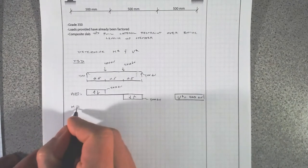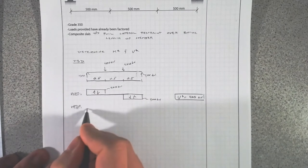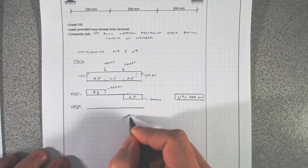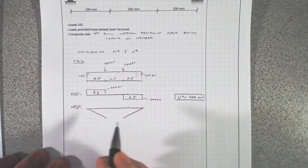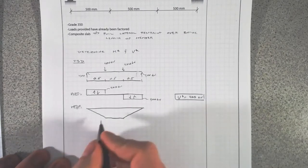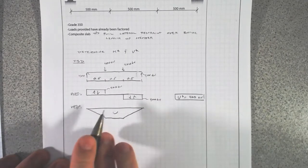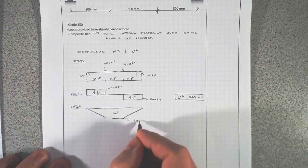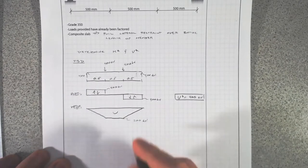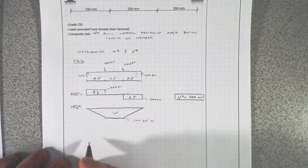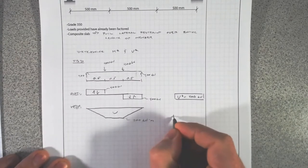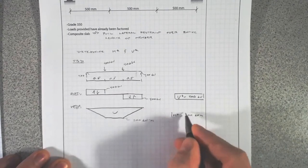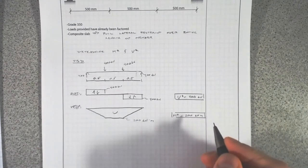Looking at the bending moment diagram, we have linearly changing moment at the ends and constant moment across the middle due to zero shear in that region. The maximum moment is just the reaction force times the distance — 200 kilonewton meters — so M* = 200 kilonewton meters.